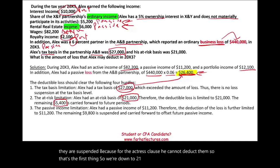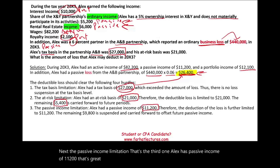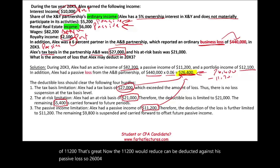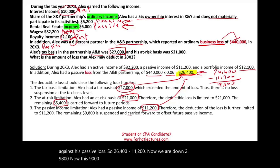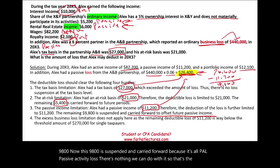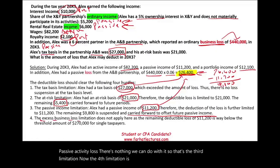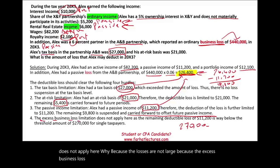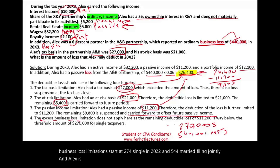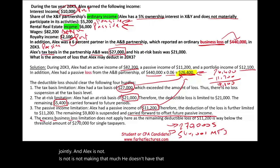We're down to $21,000. Next, the passive income limitation — that's the third hurdle. Alex has passive income of $11,200, which can be deducted against his passive loss. So $26,400 minus $11,200 — wait, we use $21,000 of allowed losses and deduct $11,200 of passive income, leaving $9,800. This $9,800 is suspended and carried forward because it's all passive activity loss. The fourth limitation is the excess business loss limitation, but it does not apply here because the losses are not large enough — EBLL starts at $270,000 for single in 2022 and $540,000 for married filing jointly.